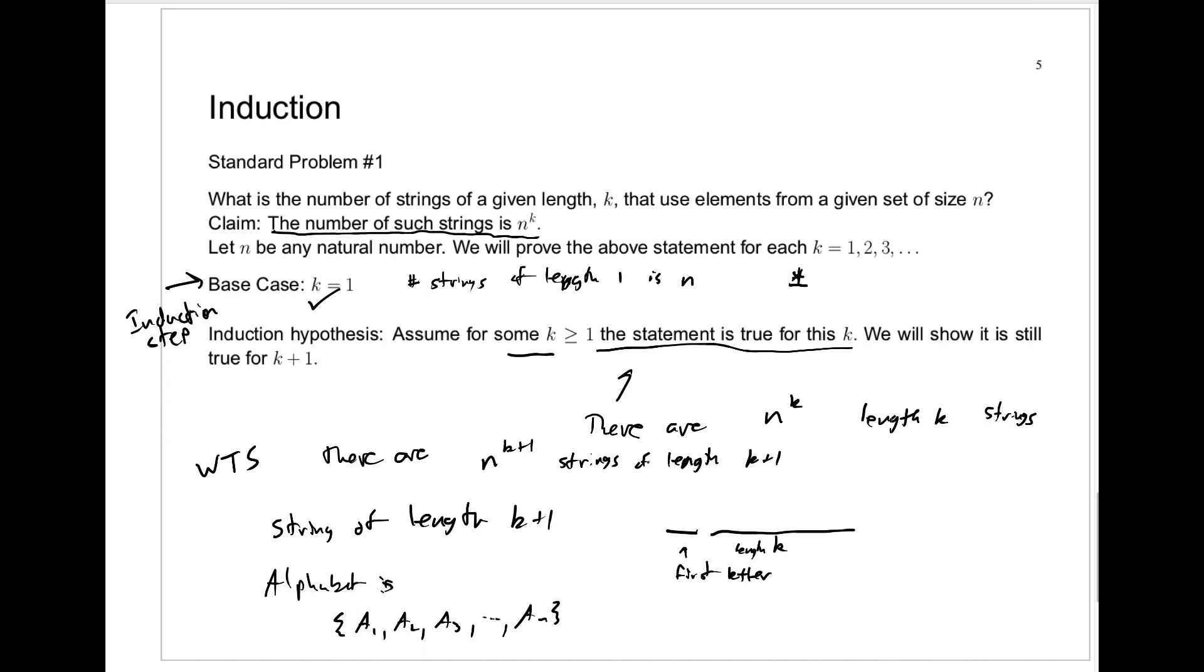Let's say this first letter is a1. How many strings of length k plus 1 have a first letter a1? Well, the rest of it is a string of length k. We know there are n to the k of those. So there will be n to the k strings of length k plus 1 that start with an a1.